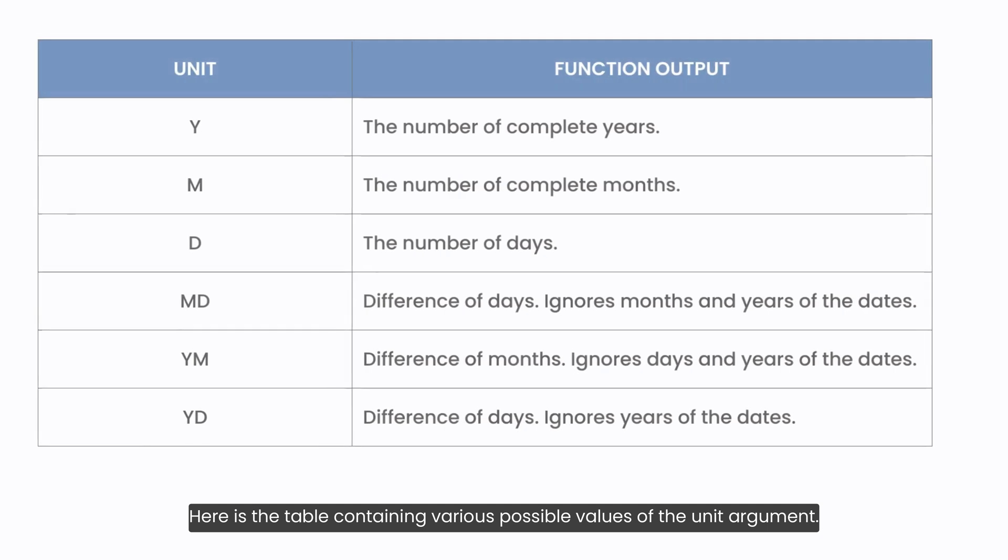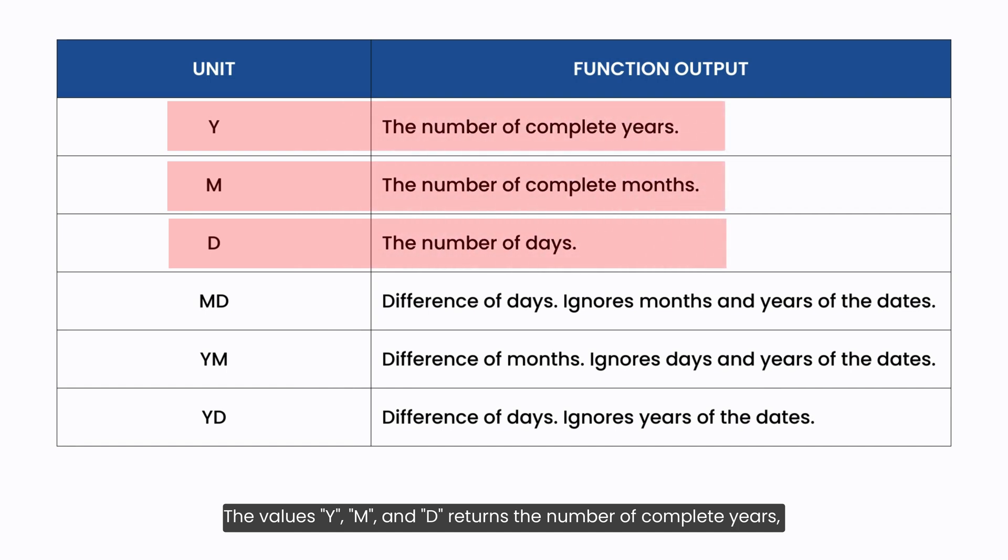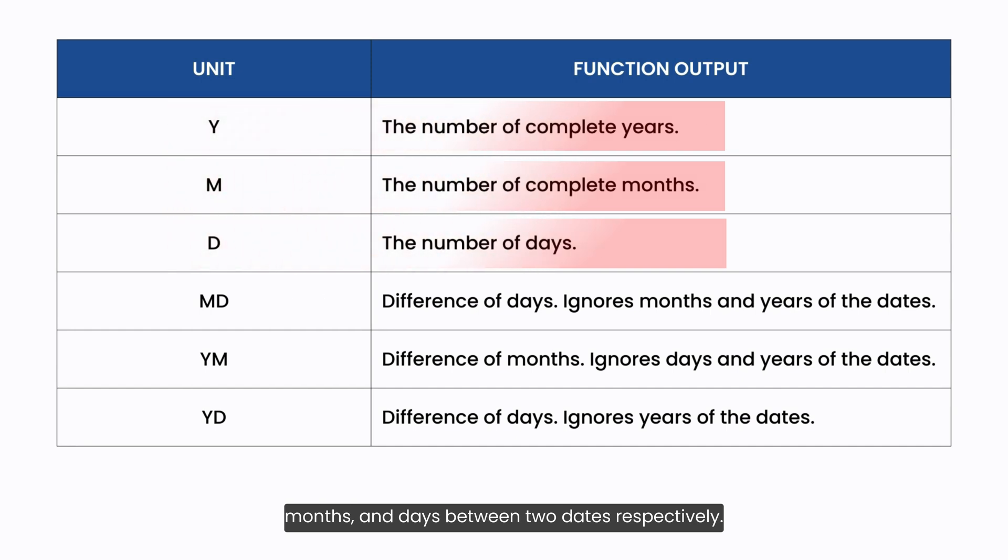Here is the table containing various possible values of the unit argument. The values y, m and d return the number of complete years, months and days between two dates respectively.